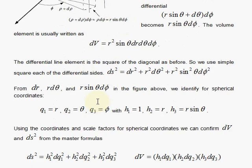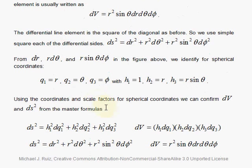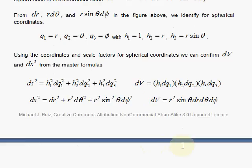So you have your h's, and then using the formulas from the h's, you can go ahead and get your formulas very easily for the arc length squared, your line element squared, and your volume element.